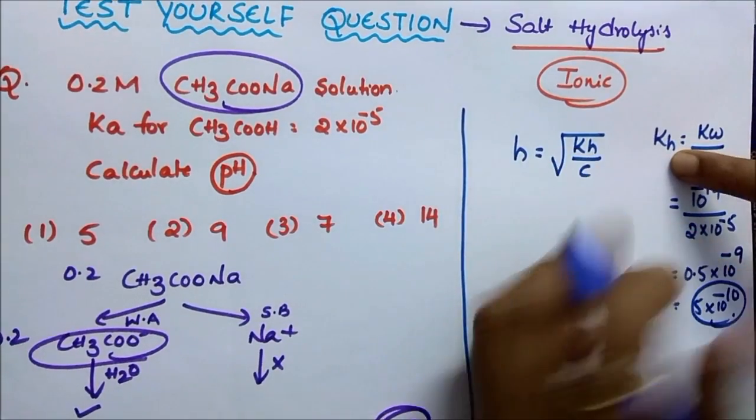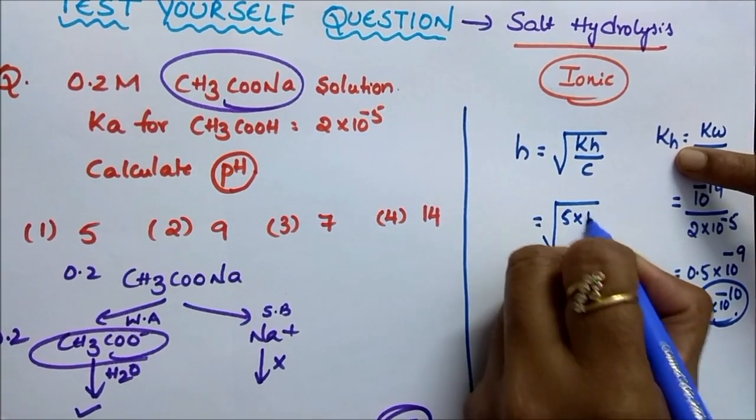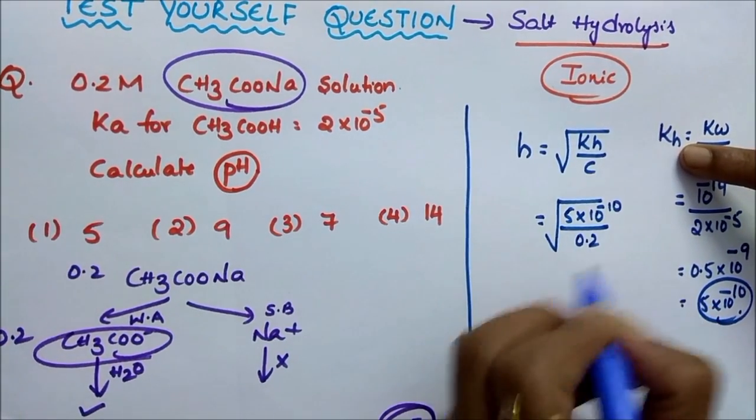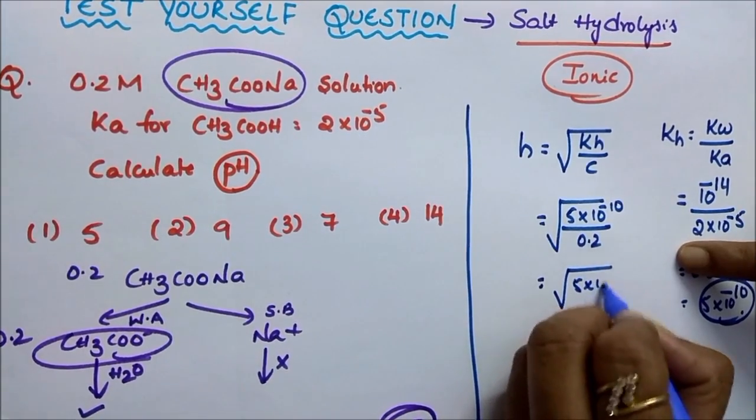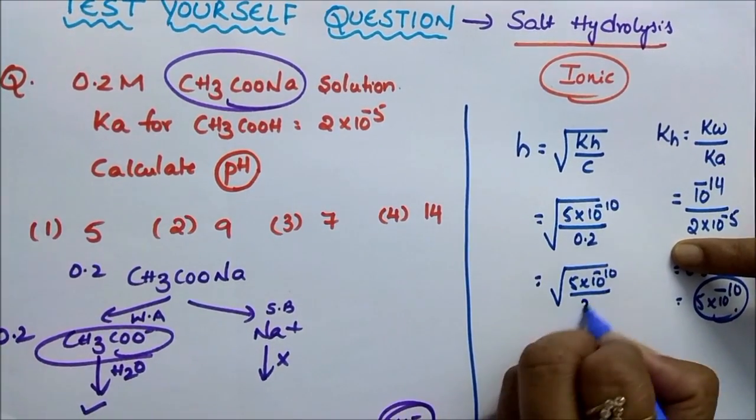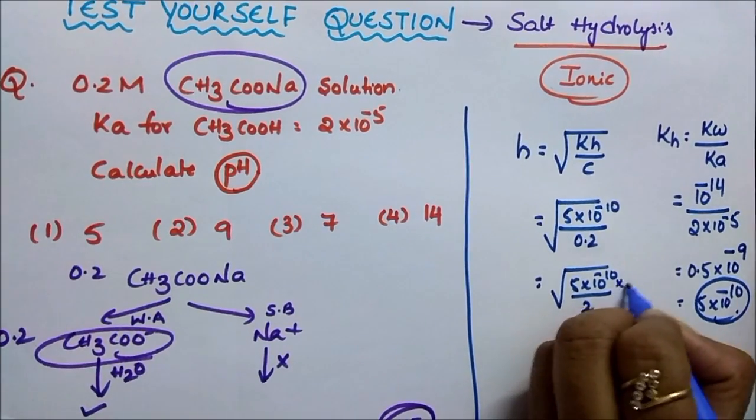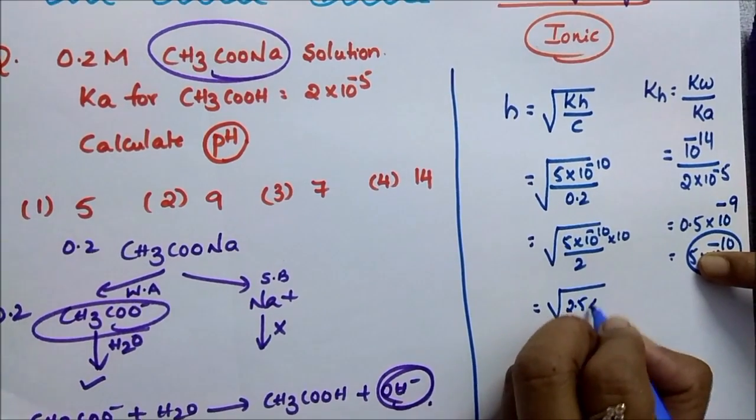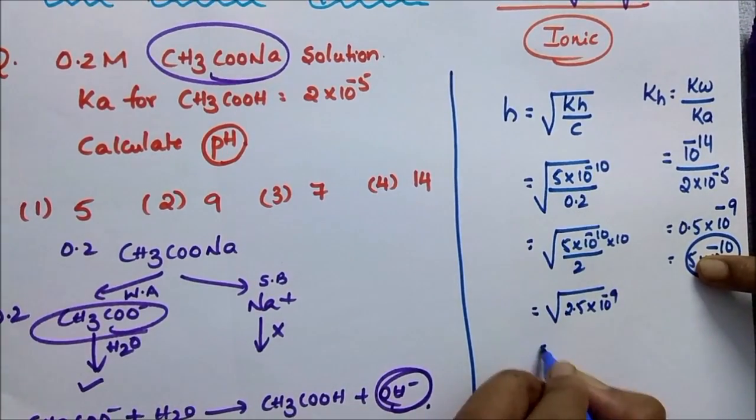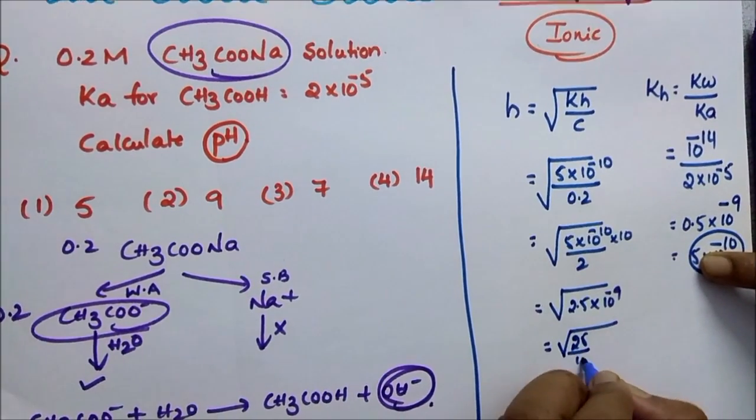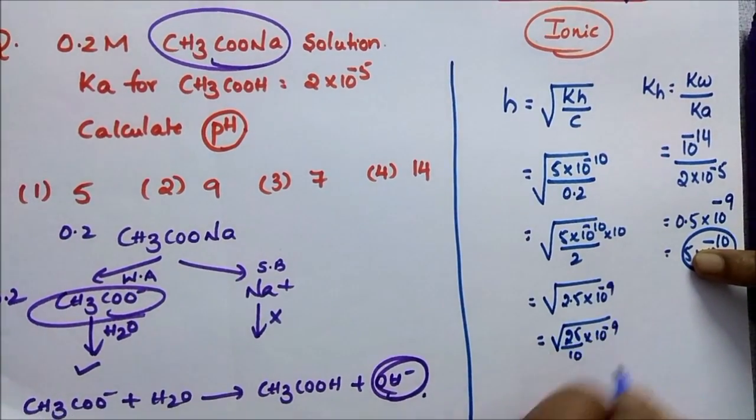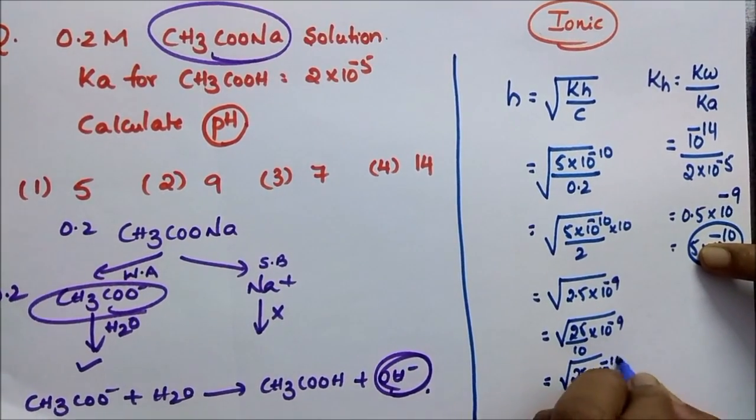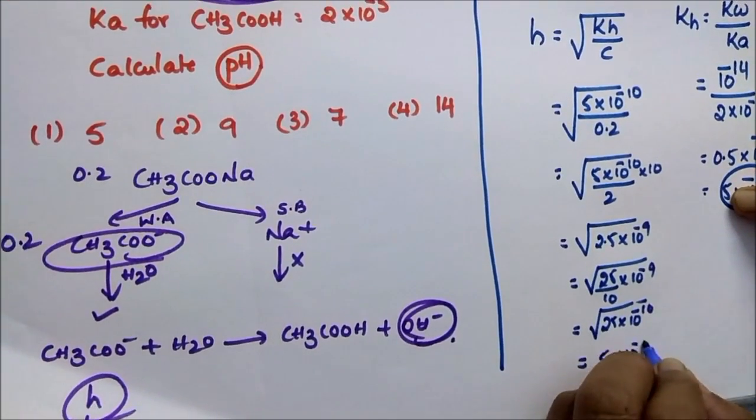Once you got KH, substitute here: 5 into 10 power of minus 10 divided by the concentration 0.2. Then it will be 5 into 10 power of minus 10 divided by 2 by 10. If it goes up, then it will be 2.5 into 10 power of minus 9. You can write it as 25 by 10 into 10 power of minus 9, then 25 into 10 power of minus 10, which is 5 into 10 power of minus 5.